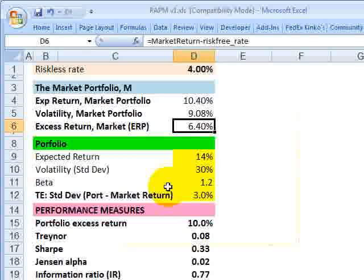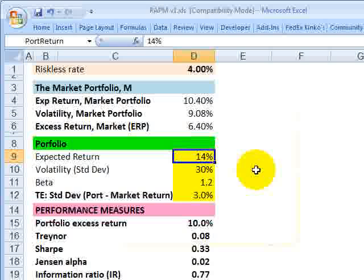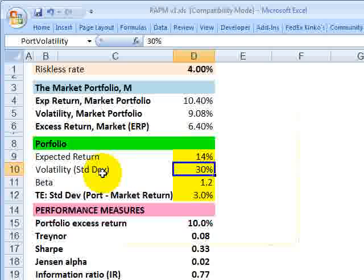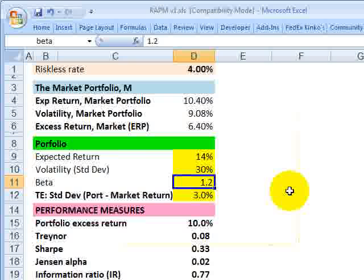Now, I just need some assumptions about the portfolio that I'm going to apply these risk-adjusted performance measures to. I'll assume the portfolio has an expected return of 14% with a standard deviation or what we also call the volatility. Volatility is synonymous with annualized standard deviation. We'll assume 30%. And now I have an assumption about the portfolio's beta, which is 1.2. I covered this a little bit yesterday. Beta is a measure of systematic risk. It's a measure of the sensitivity of the portfolio to the overall market portfolio.